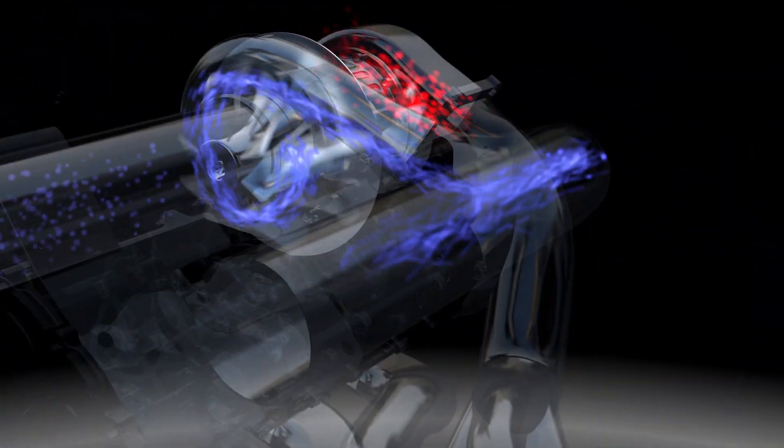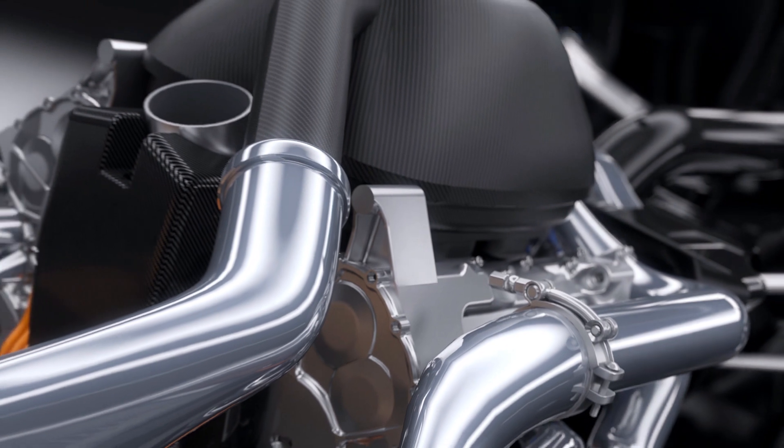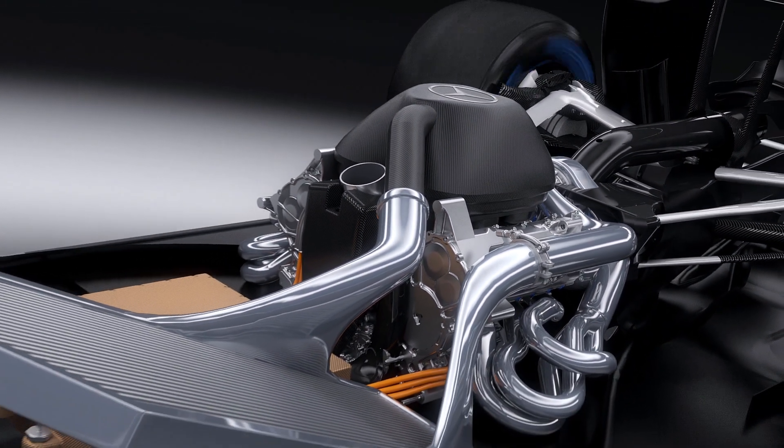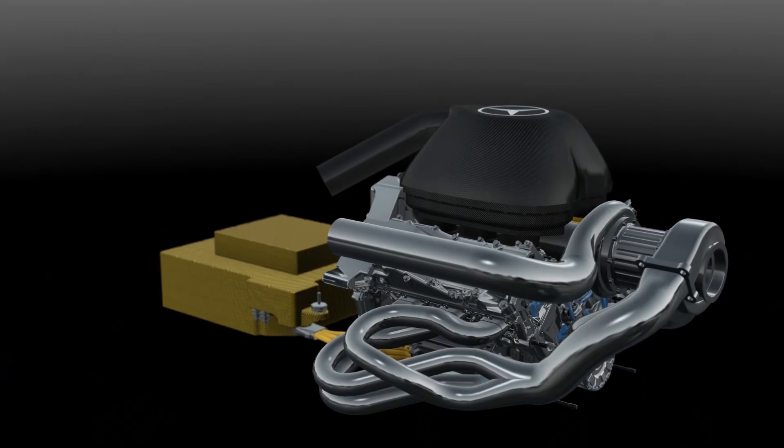The turbo uses exhaust gases to drive a compressor to push more air and therefore more oxygen into the engine. Together with high pressure direct fuel injection, this makes combustion more efficient, more power using less fuel.